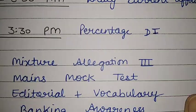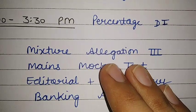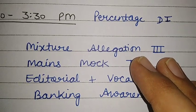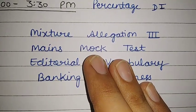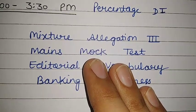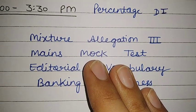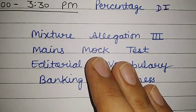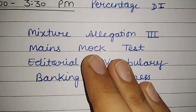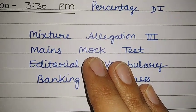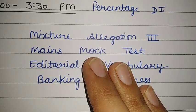Then there is percentage DI for mains, and mixture allegation level three practice questions of arithmetic. Then there is the mains mock test — for mains mock test, I suggest Oliveboard, as it is the best for mains level content. You can get the content from Oliveboard or just attempt the mains mock test; I will give you the link in the description.